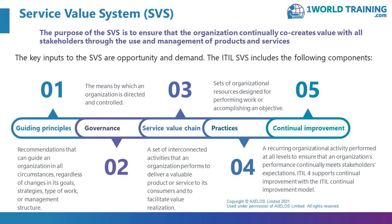There are 34 ITIL practices ranging from business-like practices such as relationship management and organizational change management, some from a traditional IT service management background like availability management, capacity management, incident management, and problem management, and some from a technology background like software development and infrastructure management. Between those 34 practices, they describe all of the resources you need, and each practice organizes a set of resources. I like to think of the practices as capabilities — something you can do. For example, with the continual improvement practice, you don't have to have a dedicated team or manager, but you do need organizations, people, information, and technology set up to do it.